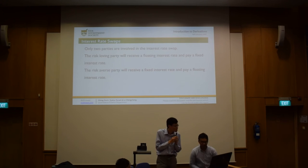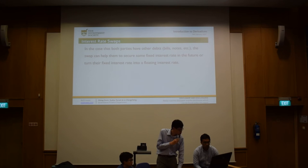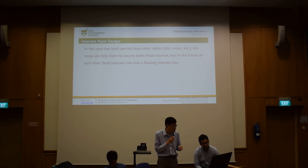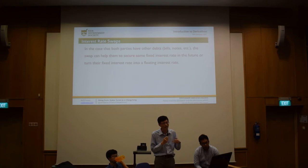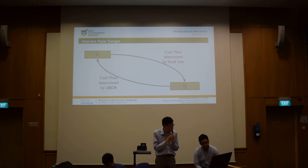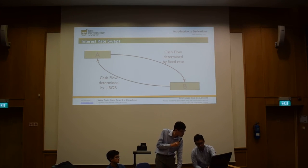Interest rate swaps are the third type of swap. For a risk-seeking party and a risk-averse party: the risk-seeking party receives a floating rate in exchange for paying a fixed rate, and vice versa for the risk-averse party. Some parties want a fixed rate in order to pay fixed income or salaries, while the other party wants to enjoy a higher expected rate of interest in exchange for higher risk. One term you may not know is LIBOR — the London Interbank Offered Rate — which in this context stands for the floating rate used in interest rate swaps.